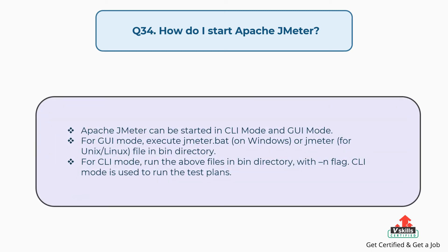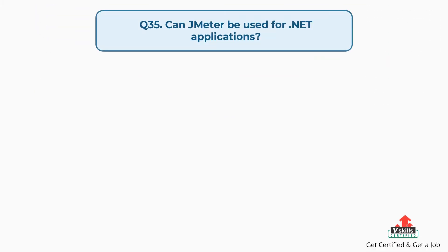Question 34: How do I start Apache JMeter? Apache JMeter can be started in CLI mode and GUI mode. For GUI mode, execute jmeter.bat on Windows or jmeter for Unix/Linux from the bin directory. For CLI mode, run the same files with the -n flag. CLI mode is used to run test plans.